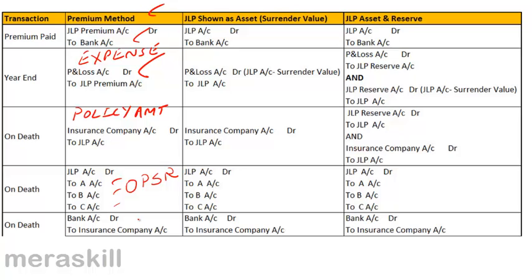When JLP is shown as an asset: joint life policy account debit to bank with the premium paid — we debit an asset account called joint life policy account. At the end of the year, joint life policy is shown at its surrender value. Any excess balance in the JLP account over the surrender value is transferred to the profit and loss account, so that JLP continues to be shown at its surrender value. We do this every year.